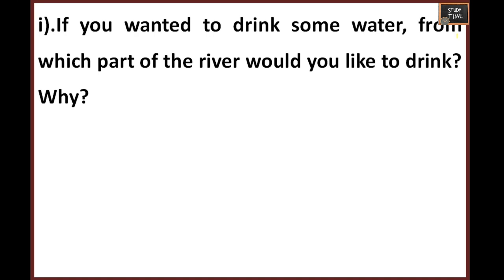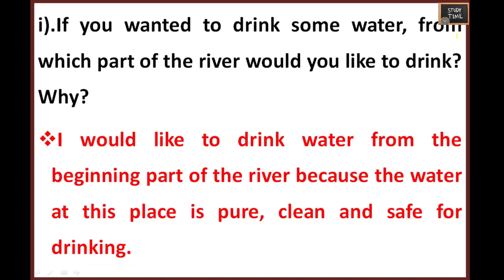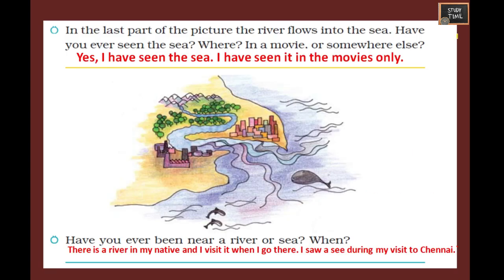If you wanted to bring some water from the river, from which part would you drink? As I already said, the water from the beginning of the river will be pure and blue in color, so you can drink the water from the beginning part of the river — it will be pure, clean, and safe for drinking. In the last picture, the river flows into the sea. Have you ever seen the sea, in a movie or somewhere else? After all, the final destination of a river is the sea — it mixes with the sea water.